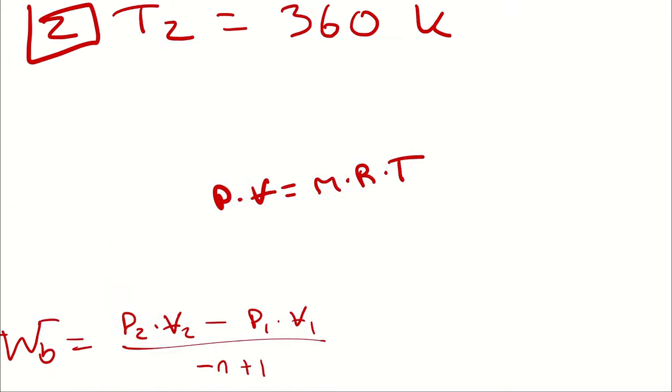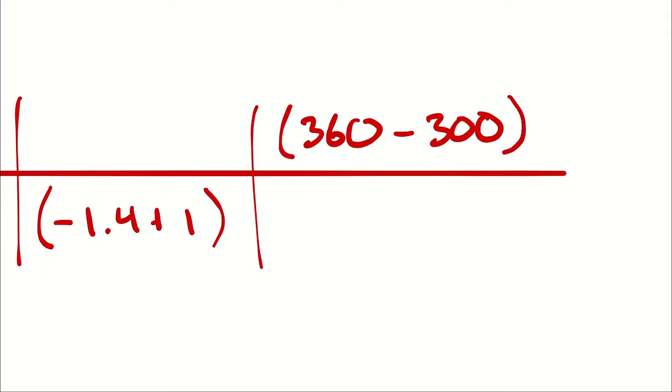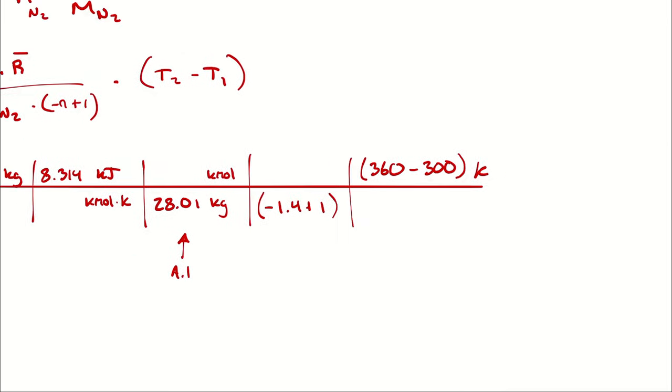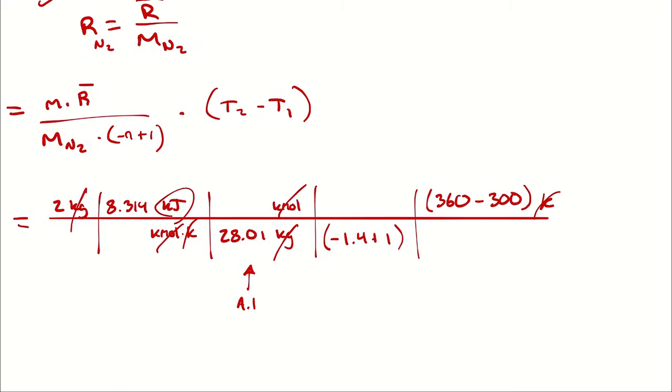And then I'm multiplying by T2 minus T1. T2 was 360 minus T1, which is 300. Again, I could write 60, but I don't want to incur any mental math errors if I can avoid it, so I'll just actually write out the subtraction and then we can make the calculator do it for us. So kilomoles is going to cancel kilomoles, kilograms is going to cancel kilograms, and Kelvin is going to cancel Kelvin, leaving me with kilojoules.